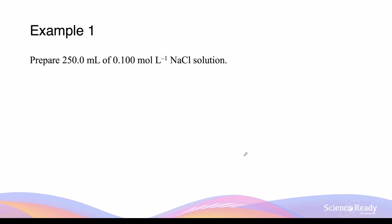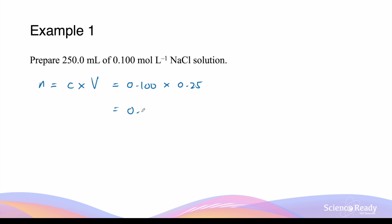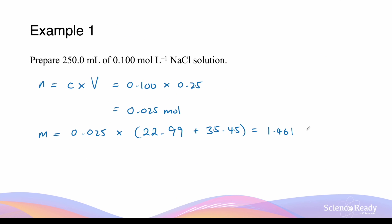Let's go through an example on calculating the required mass of a primary standard. We want to prepare a 250 mL sodium chloride standard solution at 0.1 mol/L, using a 250 mL volumetric flask. First, calculate moles: 0.1 mol/L × 0.25 L = 0.025 mol of NaCl. Then convert to mass: 0.025 × (22.99 + 35.45) = 1.461 grams of NaCl. We measure this quantity, dissolve it in a beaker, then transfer quantitatively to the 250 mL volumetric flask.